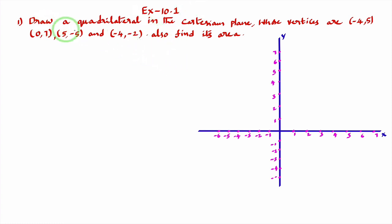You see this question, draw a quadrilateral in a cartesian plane. What I'll do, first I'll plot these points on the coordinate axis and I'll join all those points to form a quadrilateral.